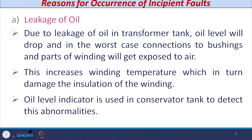The first reason for incipient faults is leakage of oil. Due to oil leakage in the transformer, the oil level may drop and in the worst condition, the bushings and other parts of the winding may be exposed to air. This increases the winding temperature, which in turn damages the insulation of the winding. To detect oil leakage, an oil level indicator is used in the conservator tank of the transformer, and this abnormality can be easily detected.